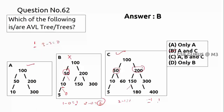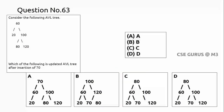Question number 63: we are given an AVL tree, which is balanced. Verifying — for node 20, left and right are fine. For node 60, left height is one, right height is two: difference is one. For node 100, one minus one equals zero. The tree is confirmed balanced before insertion.